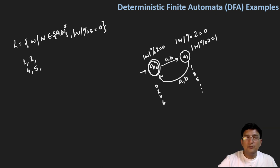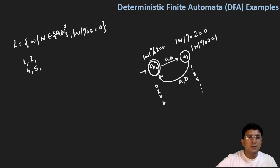So if I have to design the automata for a language where the length of the string mod two equals one, then I should make q1 the final state instead of q0.